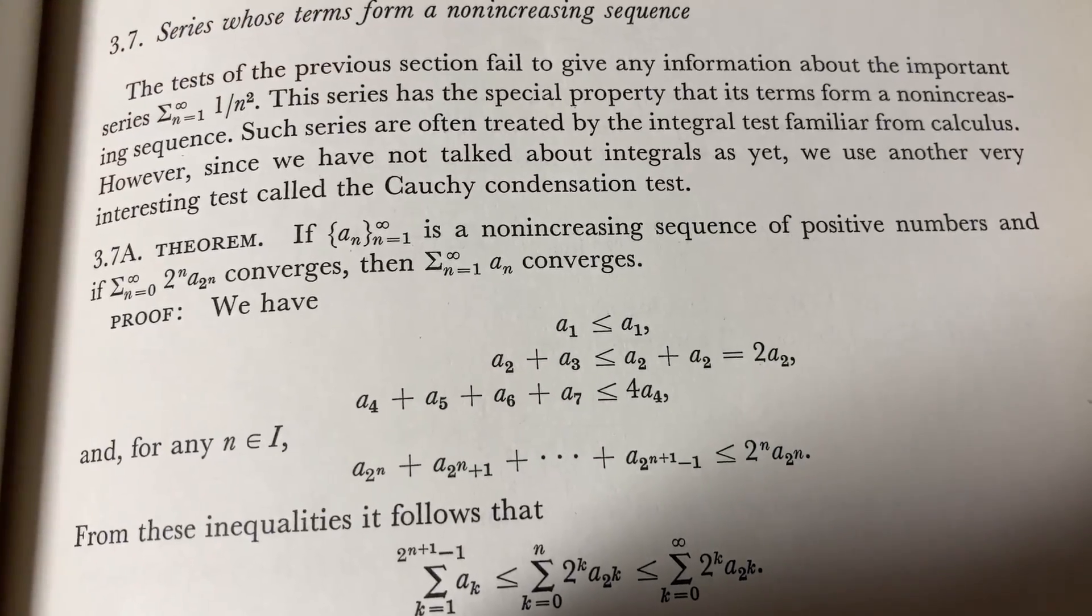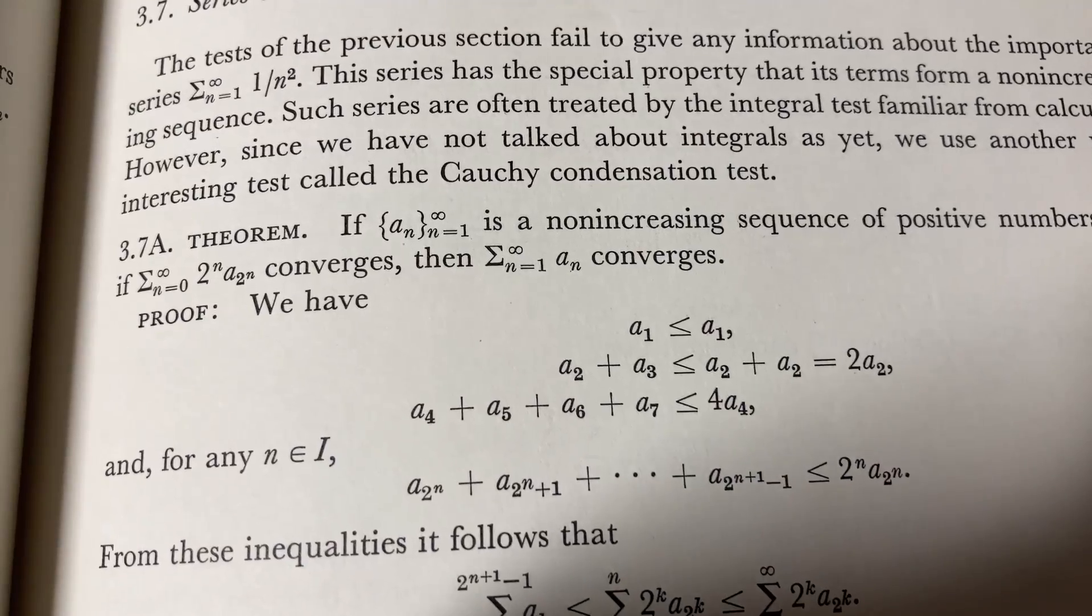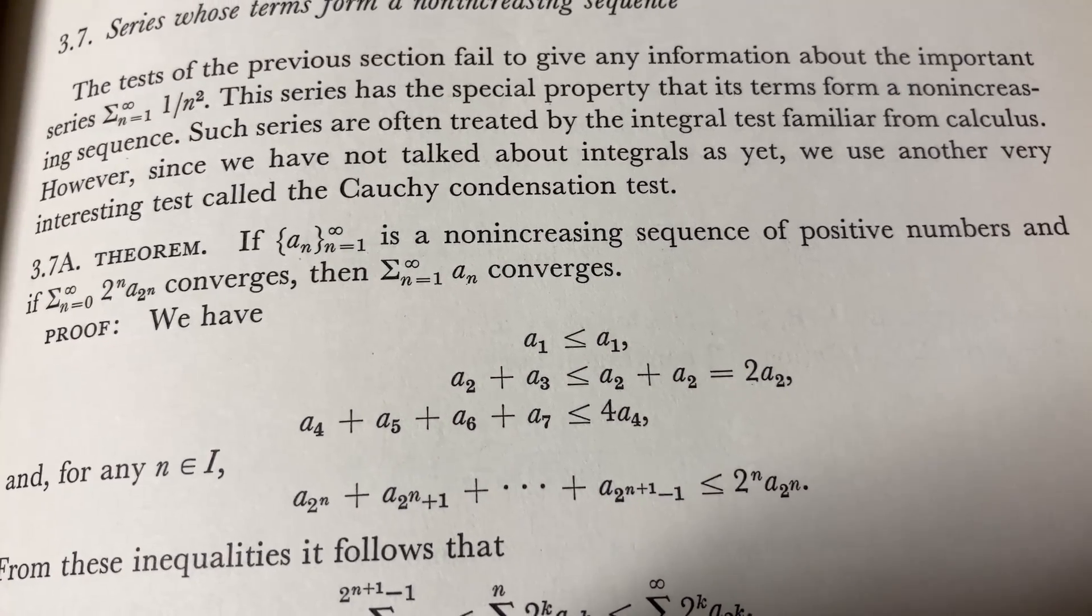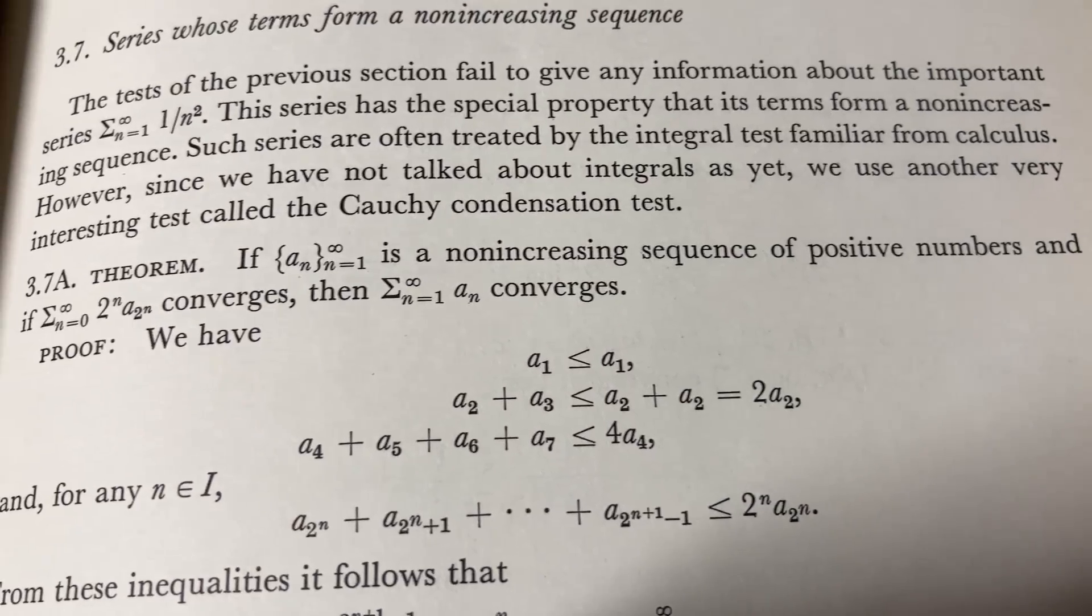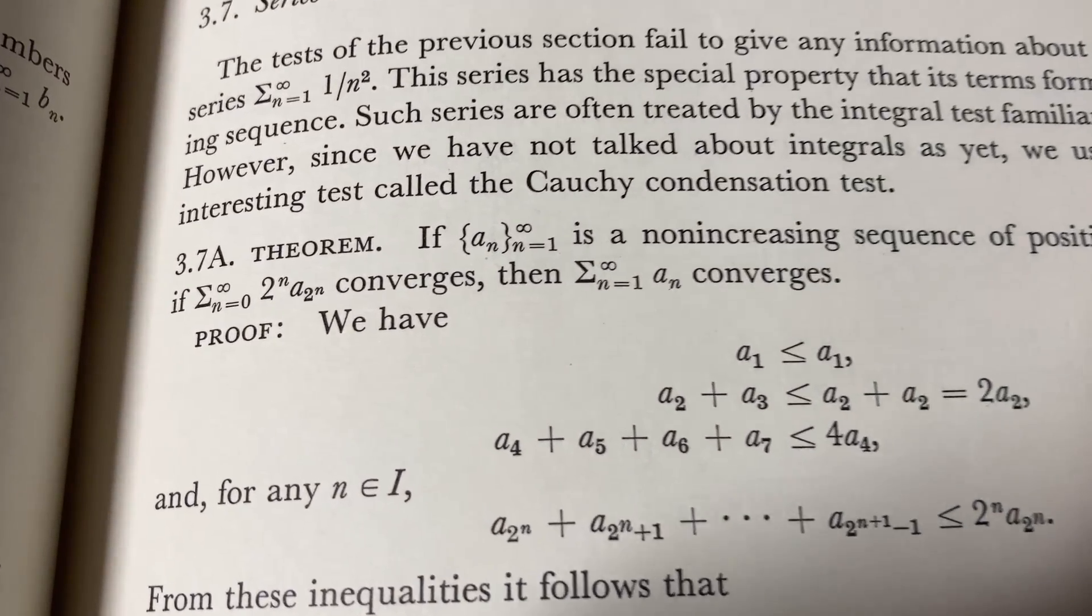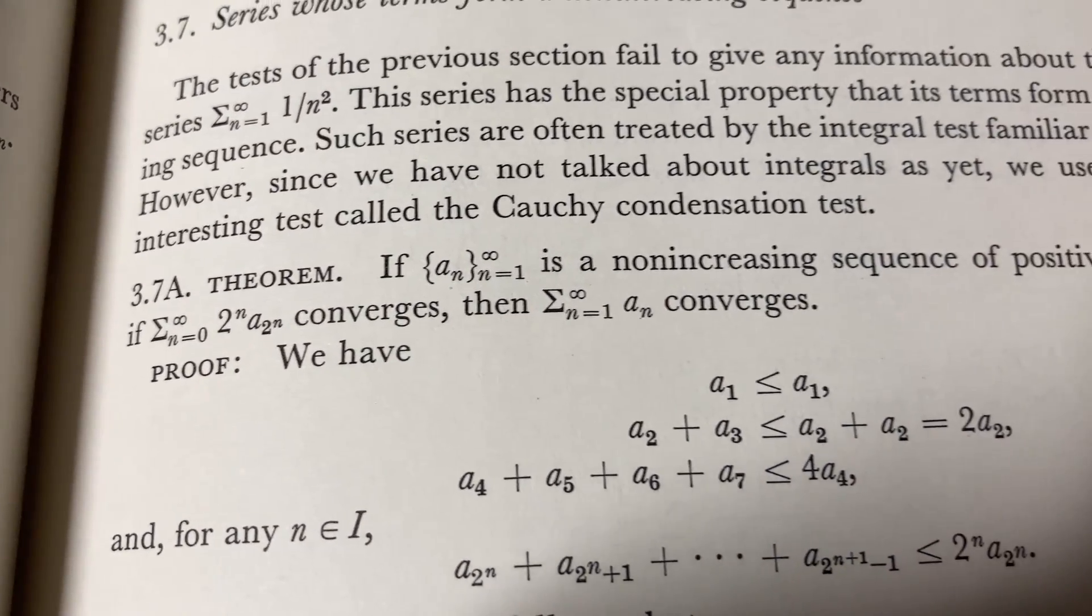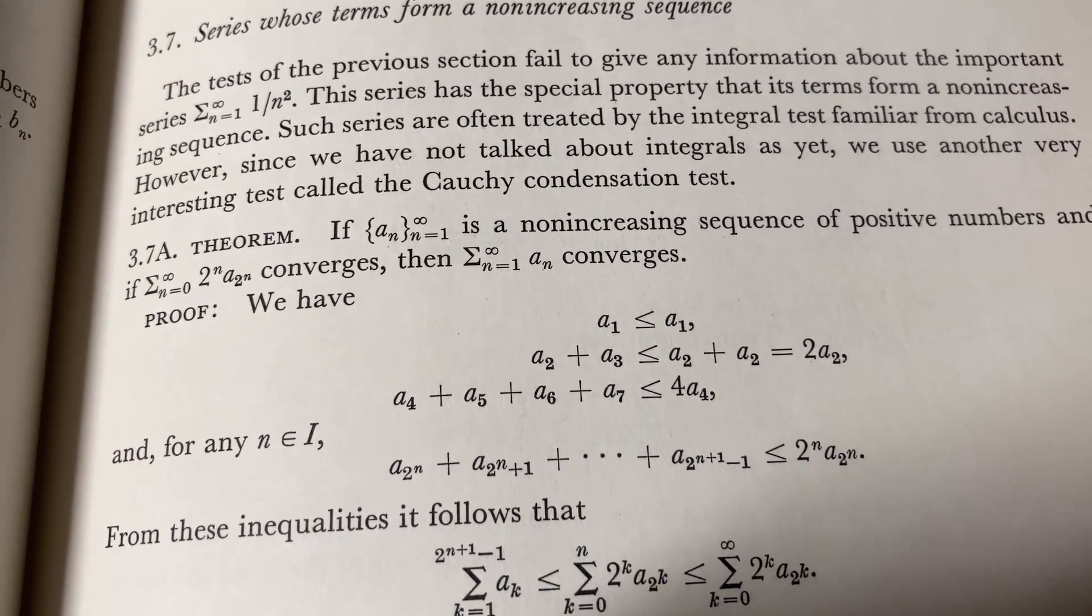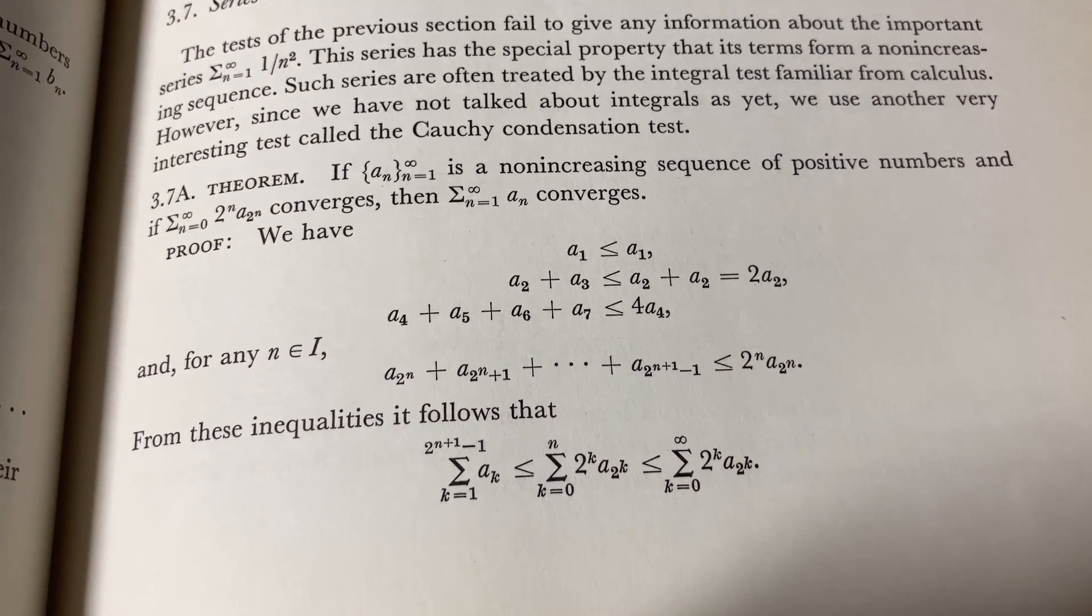This book has really cool mathematics that you don't find in other books. For example, here we have a theorem which you don't really see in every math book. If you have a non-increasing sequence of positive numbers, and if that series converges, then basically the sum of the terms of your sequence also converges. And then he gives a proof and he uses it in the next page.